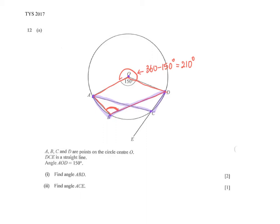Find angle ABD. Angle ABD is an angle on the circumference, so angle at center is twice angle at circumference. Matching the set face with the set face: 210 divided by 2 gives 105 degrees. So this angle is 105 degrees.